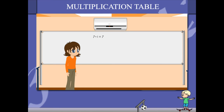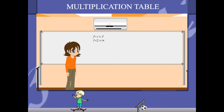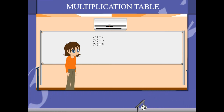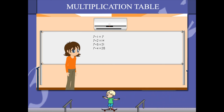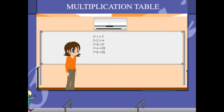7 1's are 7, 7 2's are 14, 7 3's are 21, 7 4's are 28, 7 5's are 35,